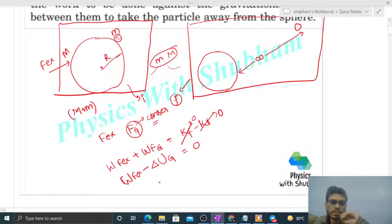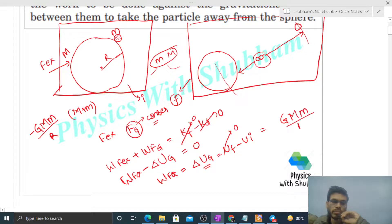That is U final minus U initial. Now final potential energy will be zero because the sphere and the particle are at infinite separation. Initial potential energy is minus of capital G, capital M, small m divided by capital R. So just put it here. There's a minus sign, so it becomes capital G, capital M, small m divided by R. This is the work done by the external force against the gravitational force of attraction.